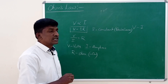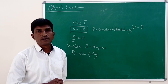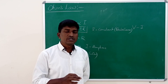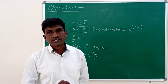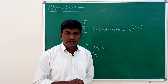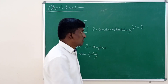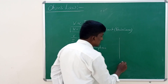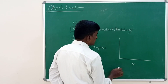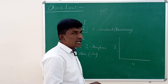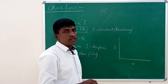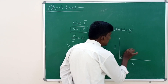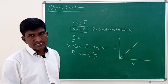All metal conductors obey Ohm's Law. Conductors which obey Ohm's Law are said to be ohmic conductors. When you draw the graph between potential difference and electric current for ohmic conductors, taking potential difference on the x-axis and electric current on the y-axis, that graph is linear.